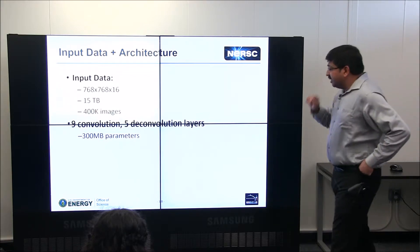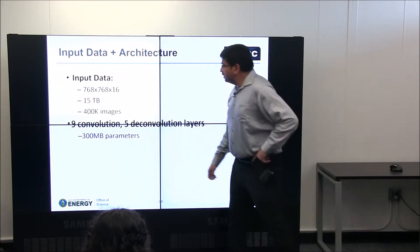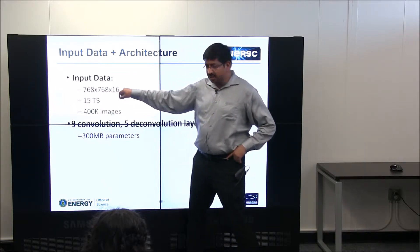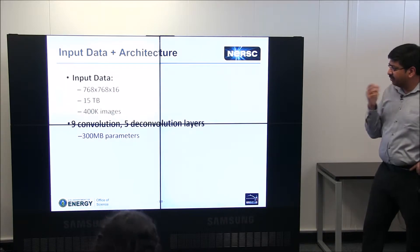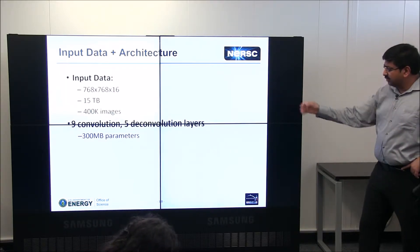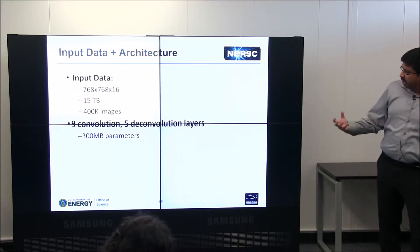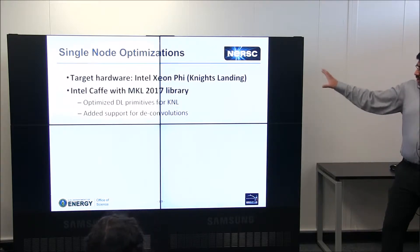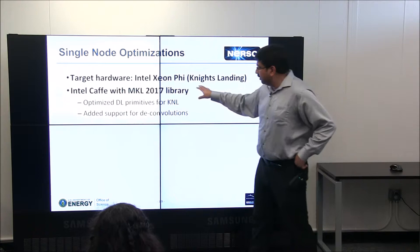The input data for this setup consists of image patches of 768×768×16 channels. In aggregate, it's 15 terabytes with 400,000 images, processed through a series of convolution and deconvolution layers. I've tried to keep it as realistic as possible. The single-node target hardware is Knights Landing.